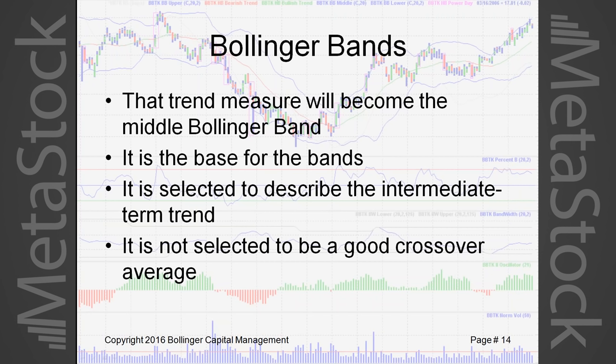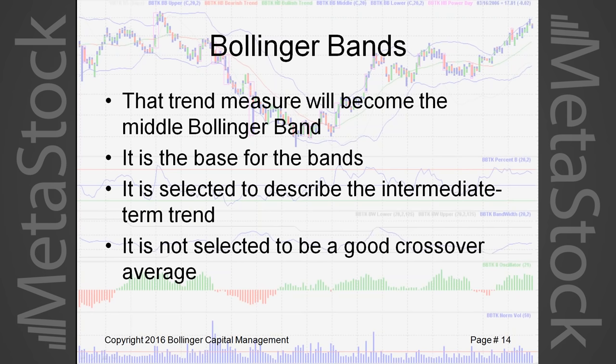That trend measure becomes the middle Bollinger Band, selected to describe the intermediate-term trend — not selected to be a good crossover average. I get a lot of email about crosses of the middle band, and I always write back saying you really ought to be focusing on other information the bands are generating. That middle band is less important than you think it is.